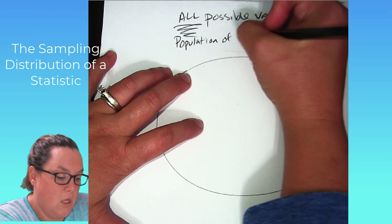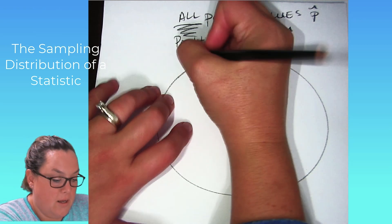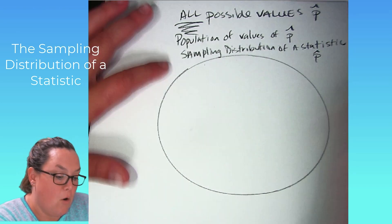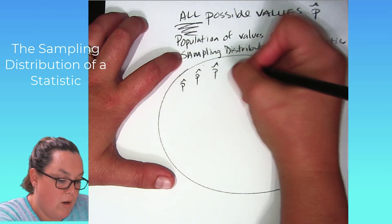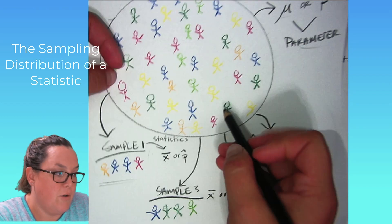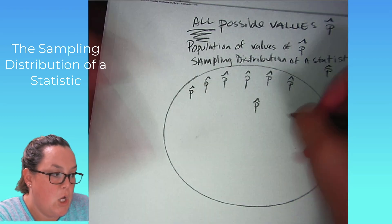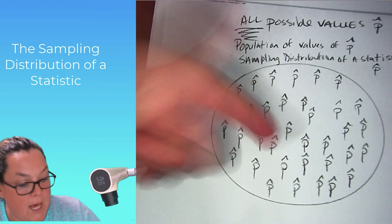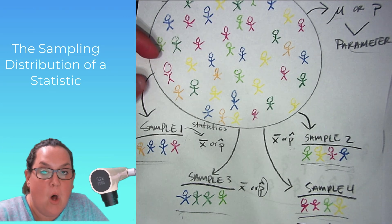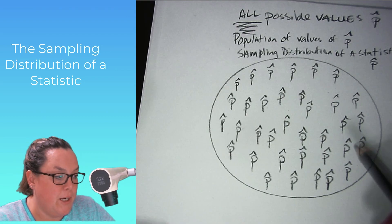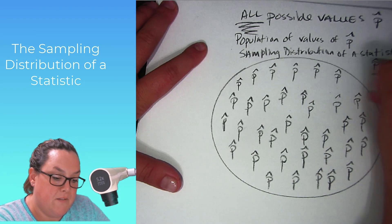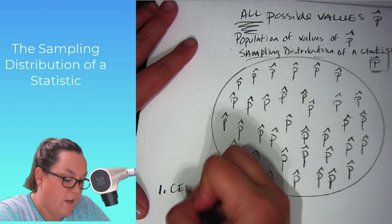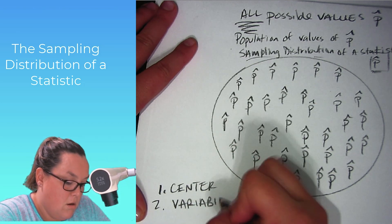Moving forward, let's focus on p-hat. We're getting different values of our statistics for new samples. If we were to get all possible values of p-hat, what kind of group is that? When we say all — whole, entire — that refers to a population. So you'd have a population of values of p-hat. That is referred to as the sampling distribution of a statistic, which specifically here would be the sampling distribution of p-hat. To describe it, you need to discuss three things: the center, the variability, and the shape.